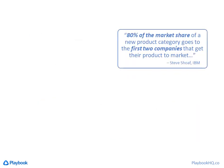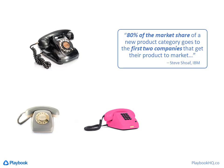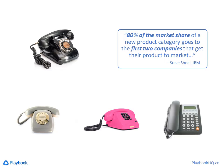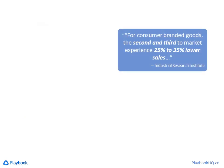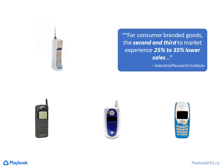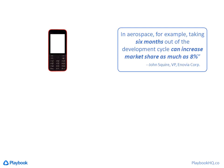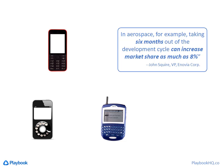Most people are generally aware that their company wants to develop products faster. If you get to market first, you'll usually sell more products and at a higher margin than someone who gets there later. But most people I talk to don't know the actual value of going fast, or the inverse — how much it costs to be late. Something changes when teams know the actual dollar value of being late.